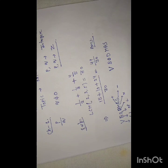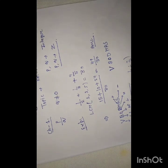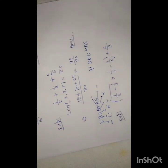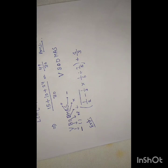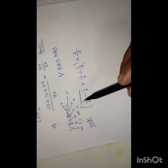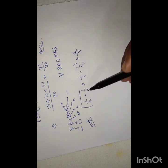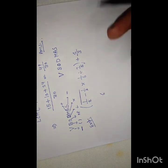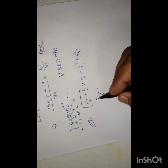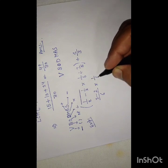We have: 1 upon 2 minus 1 upon 3 — this is under a bar line — then multiply 1 upon 6, divided by 7 upon 5. First of all, we solve what is under the bar line: 1 upon 2 minus 1 upon 3. The LCM of 2 and 3 is 6 since they are prime numbers. So we divide 6 by 2 and multiply 3 times; divide 6 by 3 and multiply 2 times. After completing the bar line, we then multiply by 1 upon 6 and divide by 7 upon 5.